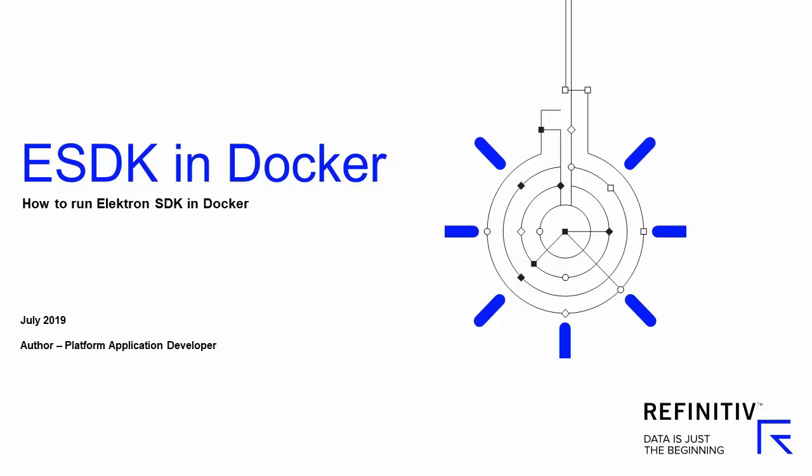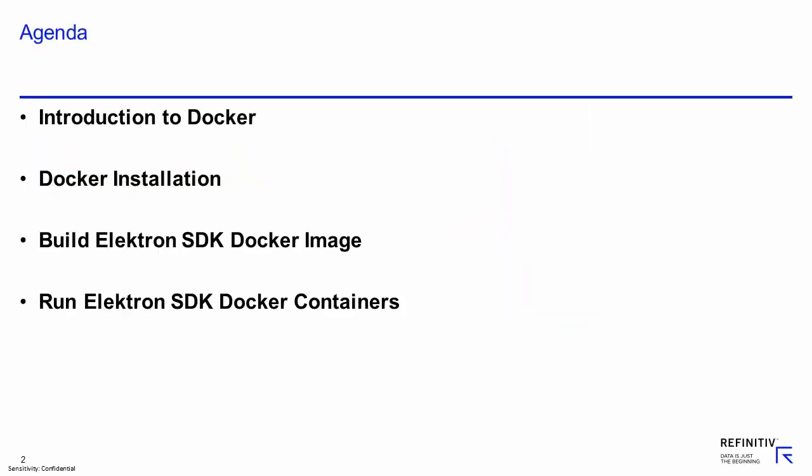Hello and welcome to this video on how to run Elektron SDK in Docker. In this video, I will start with an introduction to Docker which briefly explains what Docker is. Next, I will show how to install Docker on CentOS 7. Then, I will build the Elektron SDK Docker image from the Docker file available on GitHub. Finally, I will demonstrate how to run Docker containers from the Elektron SDK Docker image.